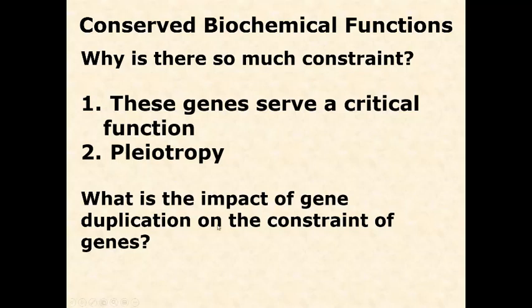Consider the impact of gene duplication on constraint. If an important pleiotropic developmental gene with four jobs gets duplicated, that would decrease the evolutionary constraint on it. With redundancy, one copy can change while the other still performs the original job. Gene duplication in a pleiotropic gene tends to release constraint, freeing up one copy to evolve and explore more of the adaptive landscape in potentially beneficial ways.